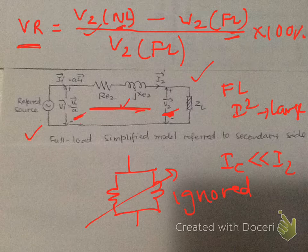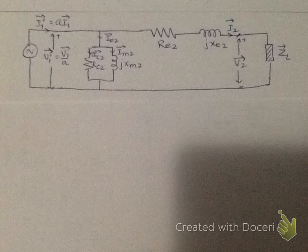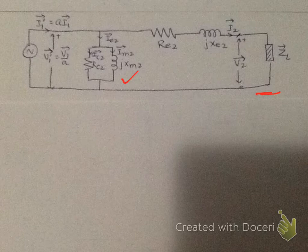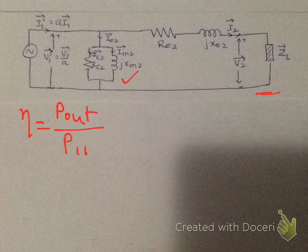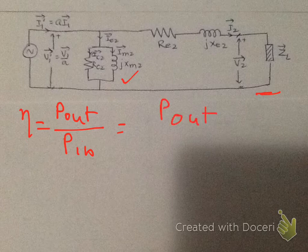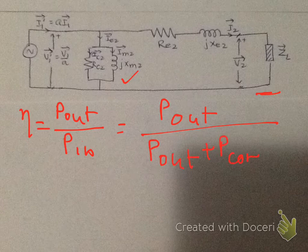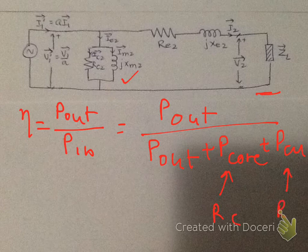The second concept is transformer efficiency. To find efficiency you need the complete equivalent circuit, including both the series branch and the shunt branch. Efficiency equals output power divided by input power, where input power equals output power plus losses. The two types of losses are core losses and copper losses, also called I²R losses.